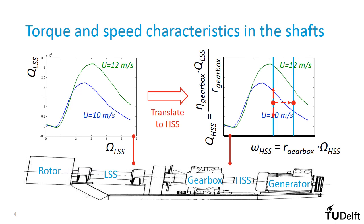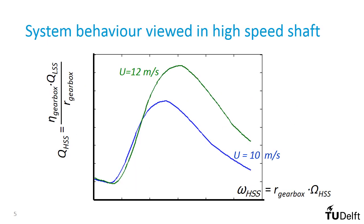Of course, they look similar in shape, but the scale in both the x- and y-axis have been changed. Now that we know the characteristics in the high-speed shaft — both looking in the direction of the rotor and in the direction of the generator — we can determine from the combined graphs at which rotational speed and torque the system is going to settle.